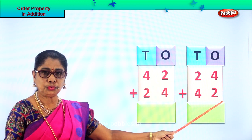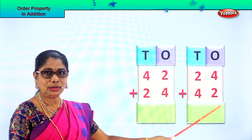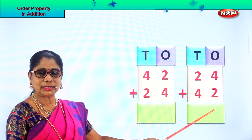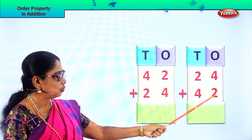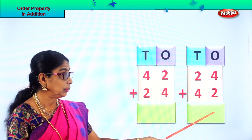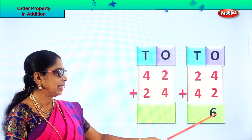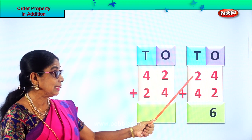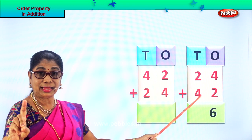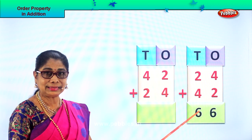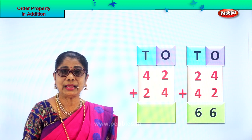Let's see what is given: 24 plus 42 or 42 plus 24. Let's add all the ones: 4 ones plus 2 ones — 4 in the mind, take 2 on your fingers. After 4: 5, 6. So 4 plus 2 makes 6 ones. Now the tens place: 2 tens plus 4 tens — 4 in the mind, 2 on your fingers. After 4: 5, 6 tens. The answer is 66. 24 plus 42 gives you 66.